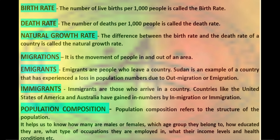The birth rate and death rate decide whether population increases, stays the same or decreases. If the birth rate is more than the death rate, population will increase. If both rates are equal, population stays the same. If the death rate is more than the birth rate, population decreases. The difference between the birth rate and death rate of a country is called natural growth. The population increase in the world is mainly due to a rapid increase in this natural growth rate.